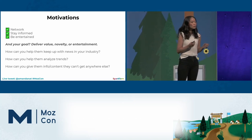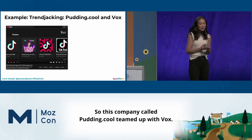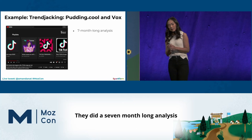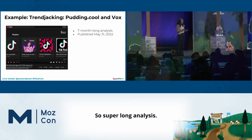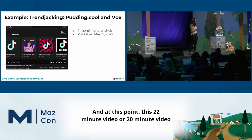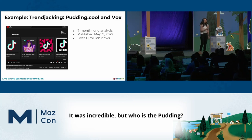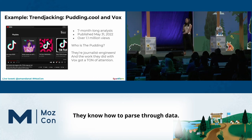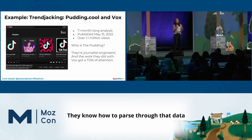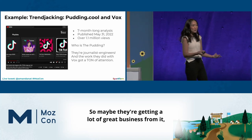Here's an example I really like: trend jacking. This company called Pudding.cool teamed up with Vox and did a seven-month-long analysis of what happens after a TikTok song goes viral. They published this just a couple months ago, and this 22-minute video has over 1.1 million views — 750,000 views in the first week alone. The Pudding are journalist-engineers who know how to parse through data and tell a compelling story with it. The work they did with Vox got a ton of attention and put them on the map.